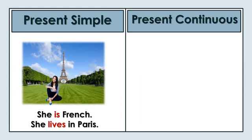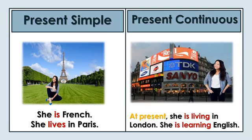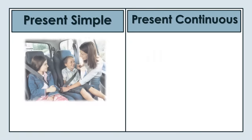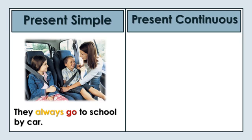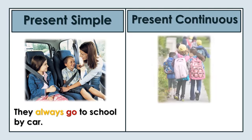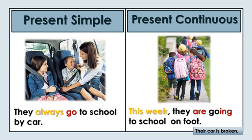She is French. She lives in Paris. At present she is living in London. She is learning English. They always go to school by car. This week they are going to school on foot.